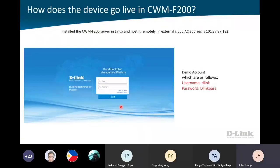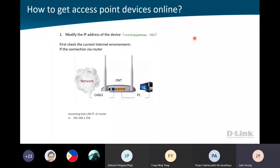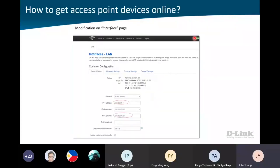Before we go inside the demo, let me go through some training slides. I have already created the account using this public IP, so you all can just go in and take a look. How are you going to add your AP inside this cloud, the CWM-F200? First, your AP must have internet connection. When you set up, please also put in the gateway - otherwise the AP will be unable to reach the cloud.